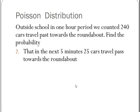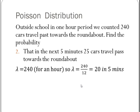So the next one is in the next five minutes, 25 cars travel past. So first off, I knew lambda for an hour was 240, so I'm going to have to divide 240 by 12 to turn it into five minute blocks. So in five minutes, 20 cars should drive past.